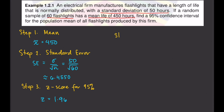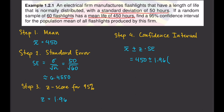Step number four is to calculate the confidence interval. The formula is x-bar plus or minus z times the standard error. So that's 450 plus or minus 1.96 times 6.4550, which gives us 450 plus or minus 12.6518.